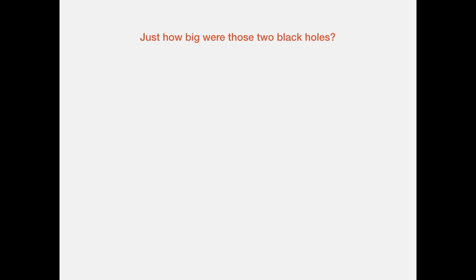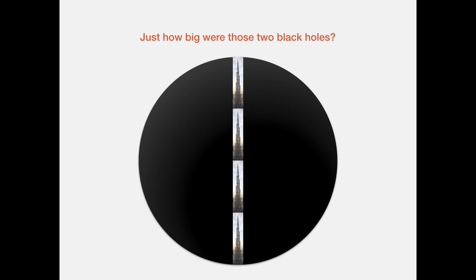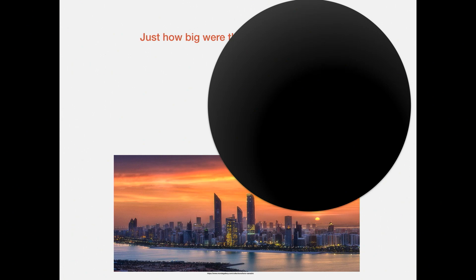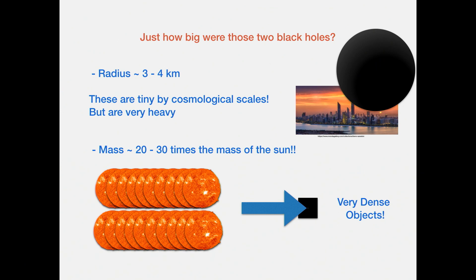You might wonder, if it's really far away, just how big were these two black holes orbiting each other? To give a sense of scale using a ruler you're familiar with — thankfully we have Burj Khalifa in Dubai — the diameter of this black hole is roughly four Burj Khalifas. So these black holes are pretty tiny by cosmological scales, but very, very heavy. In fact, these black holes are roughly 20 to 30 times the mass of the sun — imagine taking 20 suns and squashing them to a point. They're very, very dense objects.